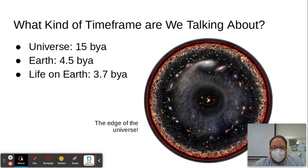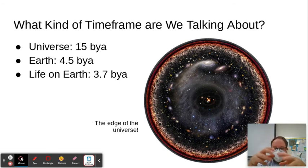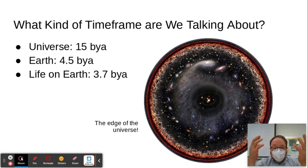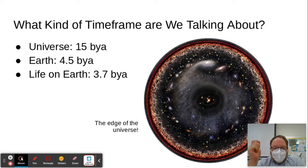Just to set context to everything: the universe began approximately 15 billion years ago with the Big Bang. All this energy radiated out, matter began to collect, and the universe formed. About four and a half billion years ago, Earth was created, and then about three and a half billion years ago, life began on Earth. So in the total history of the universe, life on Earth is somewhat young.